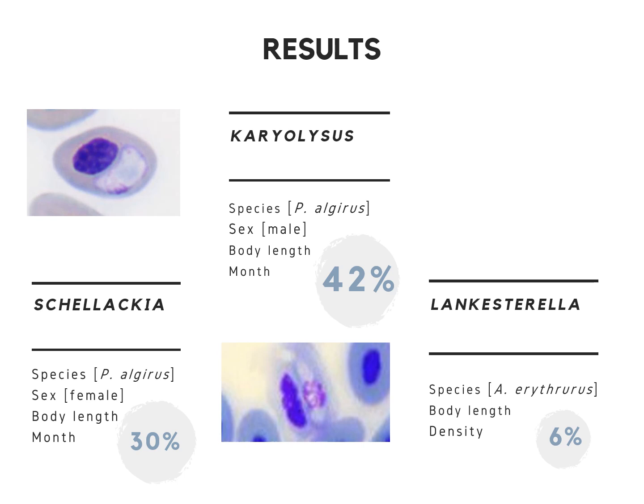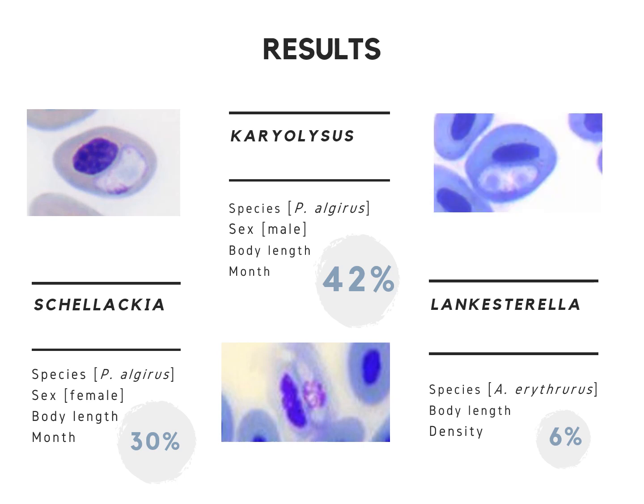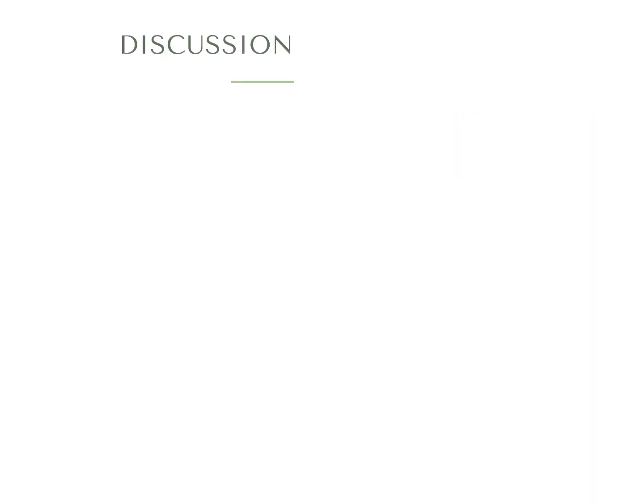The significant predictors for Lankesterella were host body length and host density. Bearing in mind these results, we could highlight four factors related to the prevalence of these parasites. First, specificity: there is a clear pattern of host specificity between blood protozoa and their hosts, making it important to distinguish between parasites in any further study investigating host-parasite dynamics in this system.